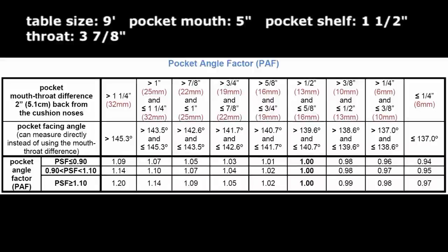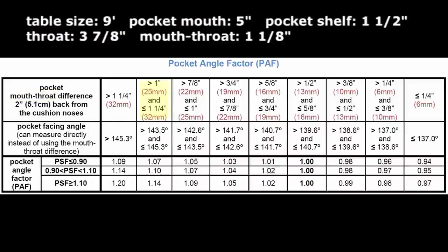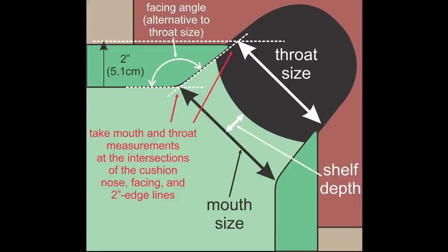The pocket angle factor table shows how the throat measurement is converted to a facing angle range. Just subtract the throat from the mouth. Here, 5 minus 3⅞ gives 1⅛, which is between 1 and 1¼, which is in the range of the 144 degrees measured earlier. If you want to be more accurate with all your measurements, you can lay down large post-it notes or masking tape to better define the lines and intersection points.